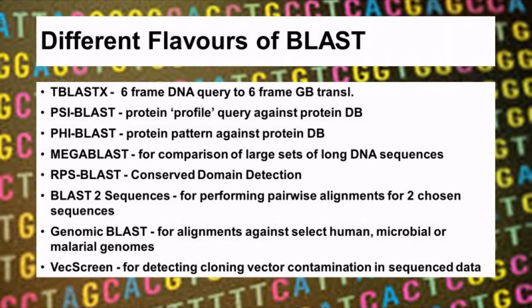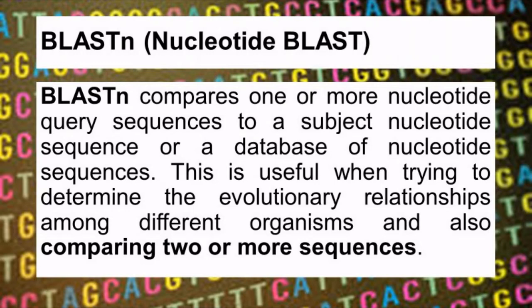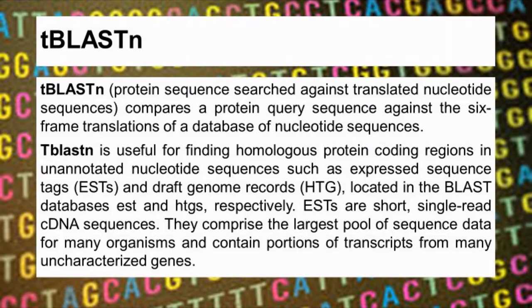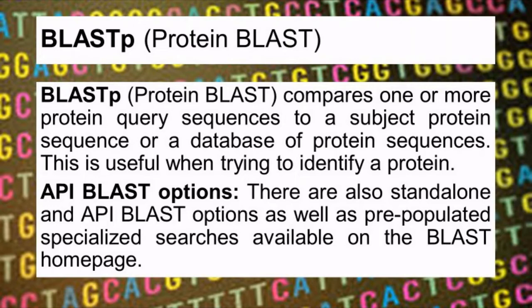There are four important BLAST tools that are widely used. BLASTN is nucleotide BLAST, which compares nucleotide sequences. BLASTX compares translated nucleotide sequences against protein sequences. TBLASTN searches a protein sequence against translated nucleotide sequences. BLASTP is protein BLAST, which compares protein sequences. There are also PSI-BLAST and API BLAST options available.